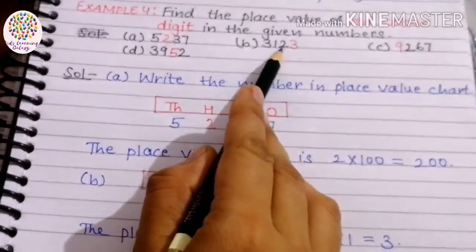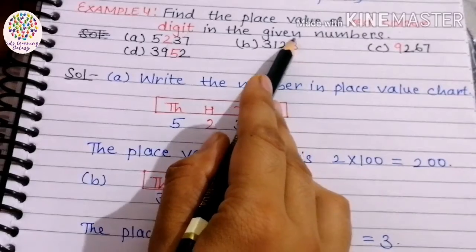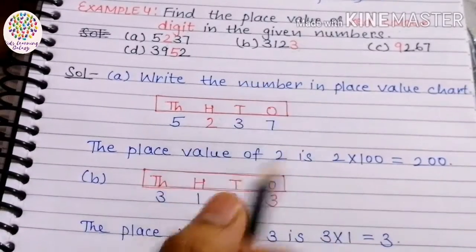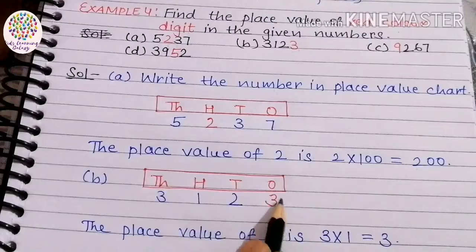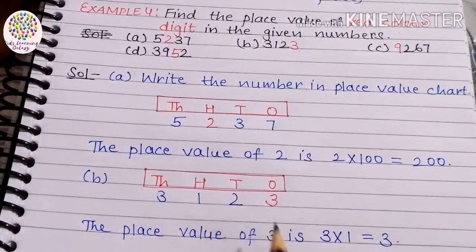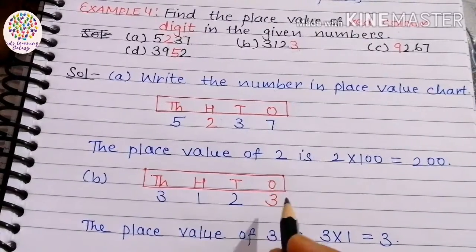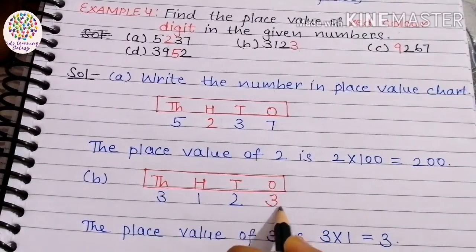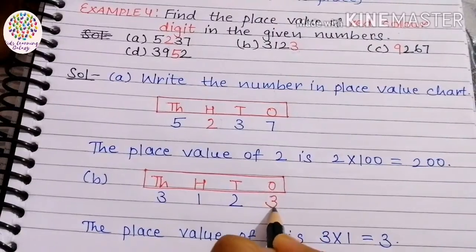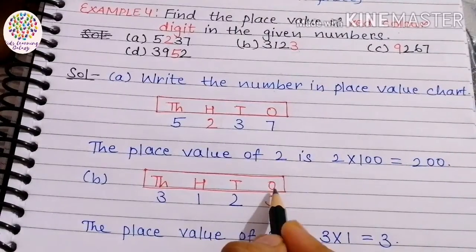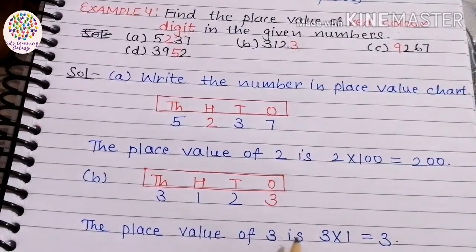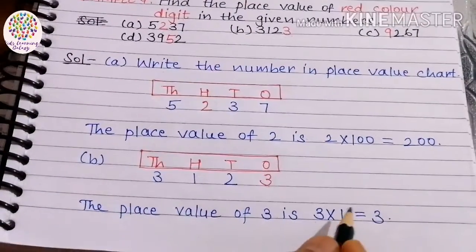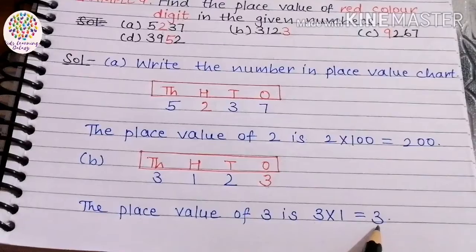Part B is 3123. We write the number in the place value chart and find where the red color digit is written. 3 is at ones place, so the place value of 3 is 3 × 1 = 3.